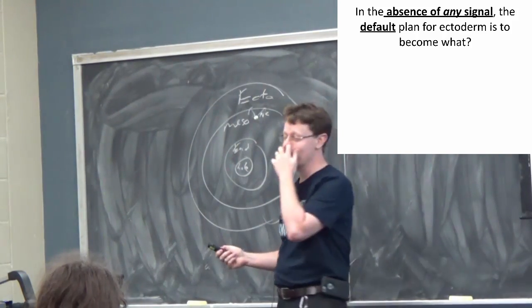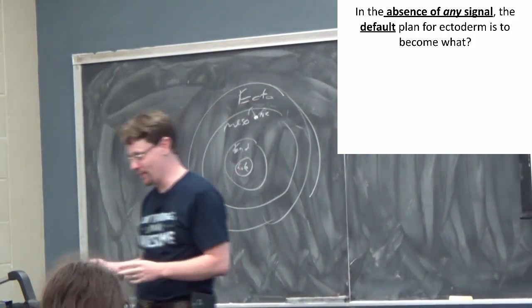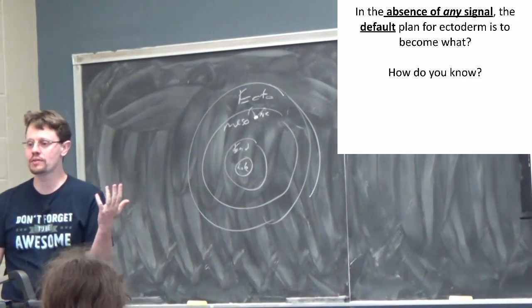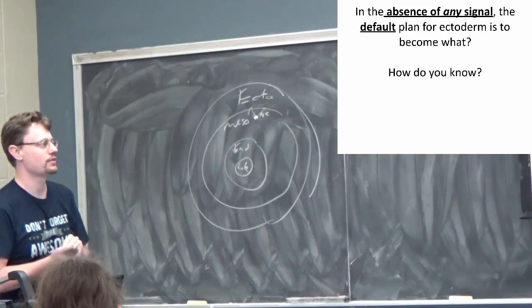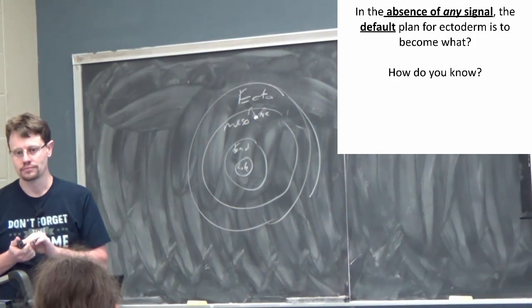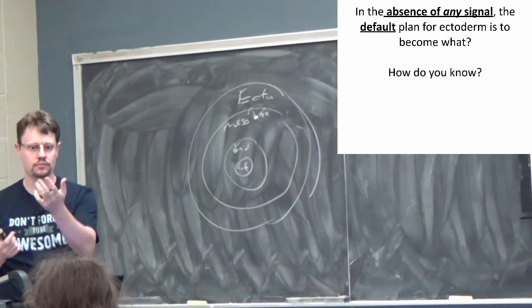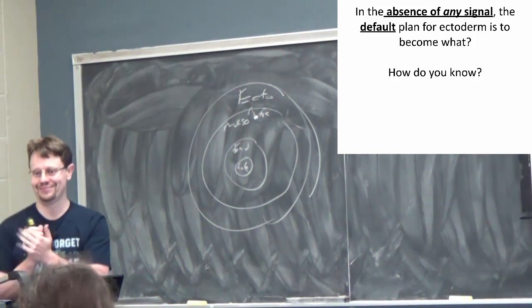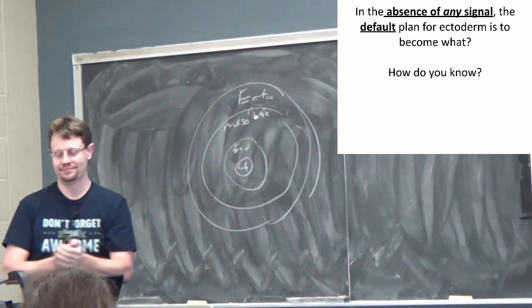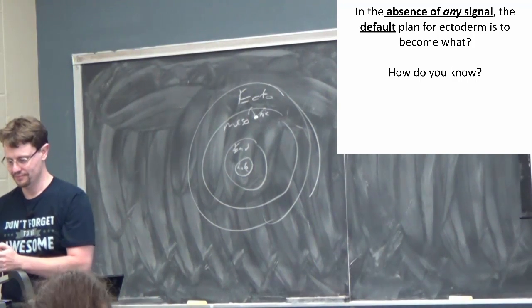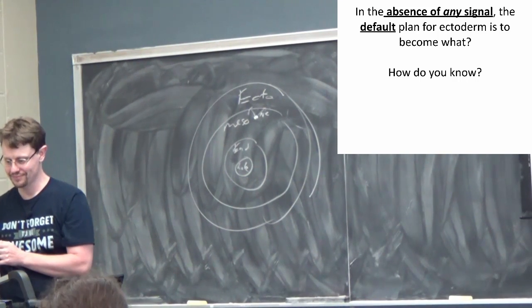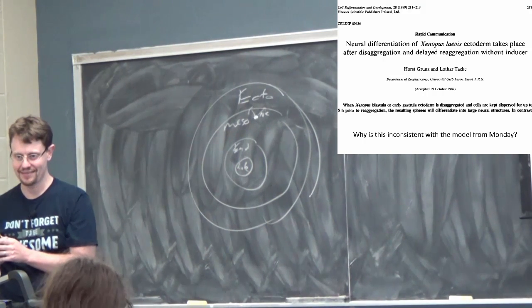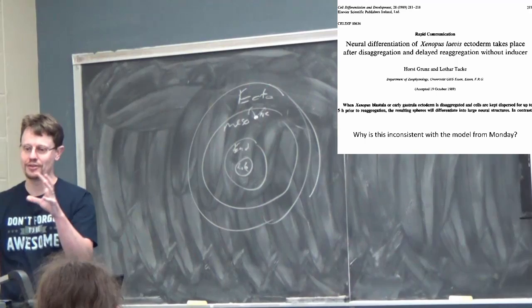Yes, so they become, in the absence of any signal, they become brain. How do we know? How do we know that? What was some pieces of evidence that would suggest that? Sure. For the experiment that we read, when you separated the endoderm cells - the ectoderm cells - it forms into the nervous system.